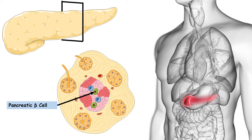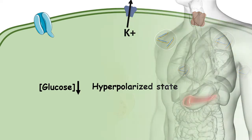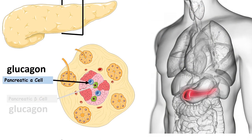Now let's look at the hormonal situation during fasting. In the fed state, insulin level is high and pancreatic beta cells secrete insulin. But in the fasted state, when glucose level is low, glucose cannot enter the pancreatic beta cell. As a result, the pancreatic beta cell is in a hyperpolarized state and cannot secrete insulin. Rather, glucagon is secreted, which increases the blood glucose level.